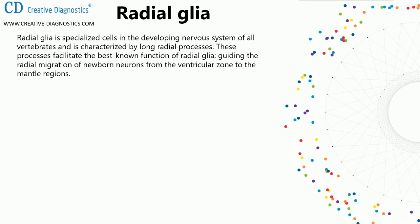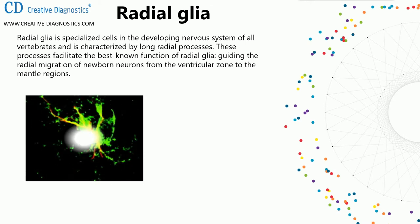Seventh: radial glia. Radial glia are specialized cells in the developing nervous system of all vertebrates, characterized by long radial processes. These processes facilitate the best-known function of radial glia: guiding the radial migration of newborn neurons from the ventricular zone to the mantle regions. Radial glia cell markers include vimentin, PAX6, BLBP (FABP7), nestin, and SOX2.